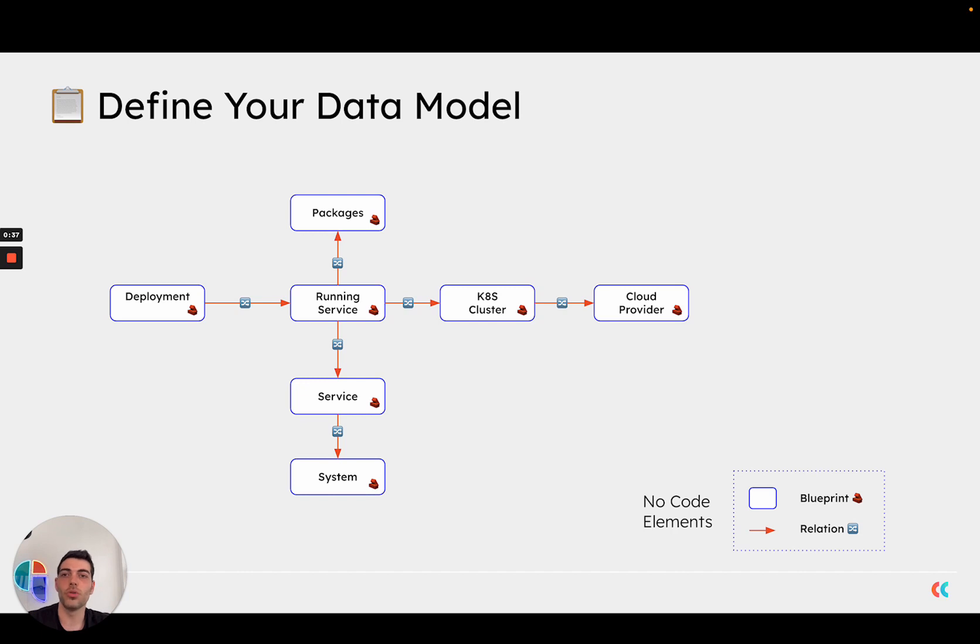Then, once you have your blueprints in place, we give you another element called relation. A relation allows you to create a mapping between the different blueprints and assets in your software catalog.